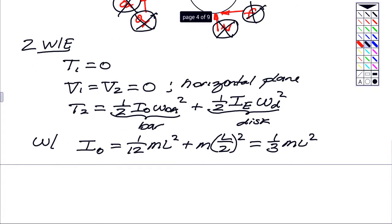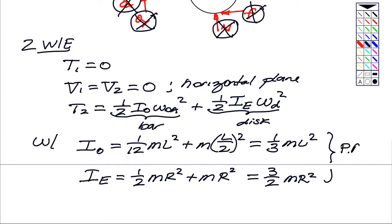And for the disk, its mass moment of inertia about the contact point is what it is about the center of mass, 1/2 MR squared, plus M times the distance between E and the center of mass, that's R, squared. And together, we get 3/2 MR squared. So both of these are a result of the parallel axis theorem.